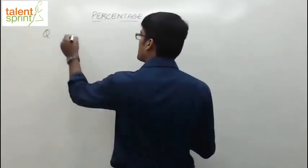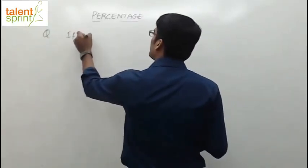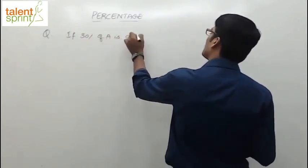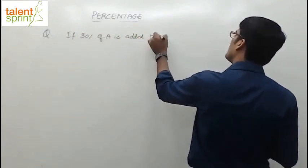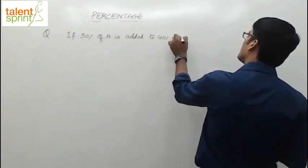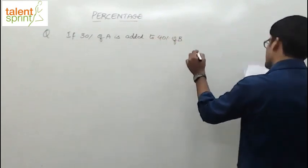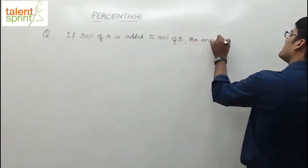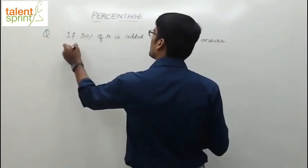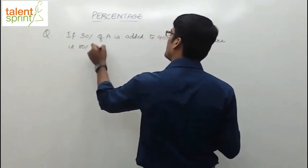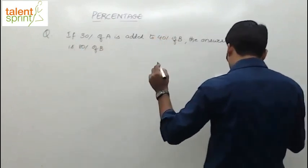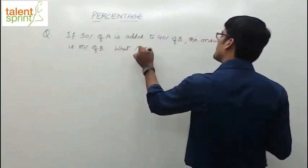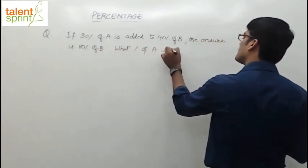If 30% of A is added to 40% of B, the answer is 80% of B. So what percentage of A is B?